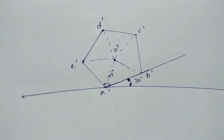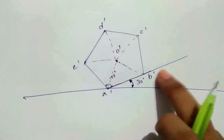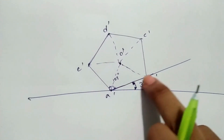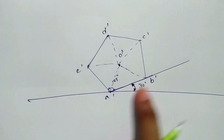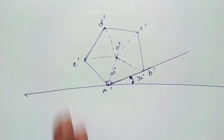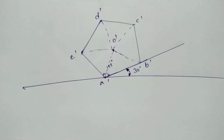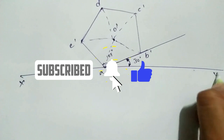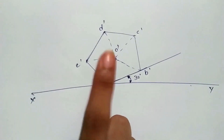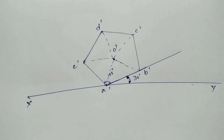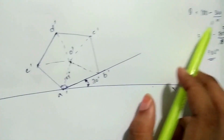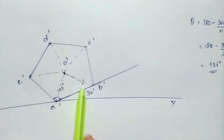I will show you the top view of the pentagon. This is the ground. The corner of the pentagon is placed at an inclination of 30 degrees. I will show you the corner of the pentagon. This is the standing position. First, we draw the XY line, then the pentagon is drawn and we show the corner of the pentagon.